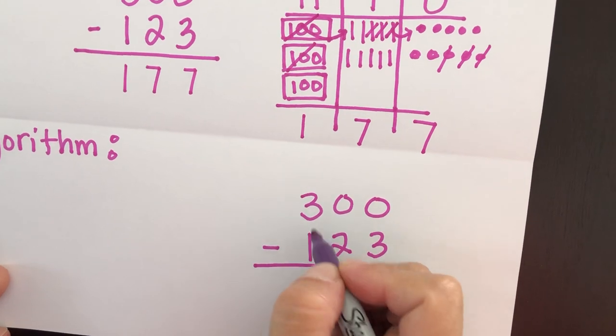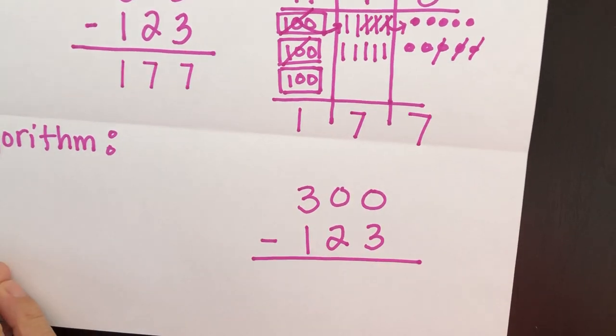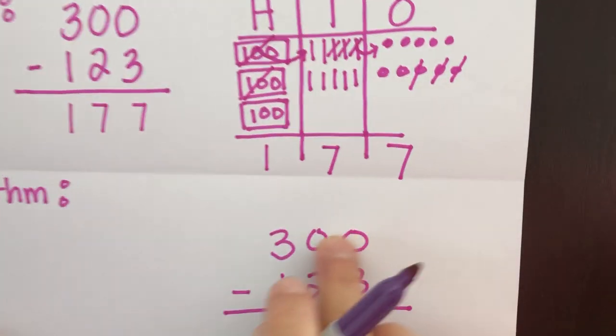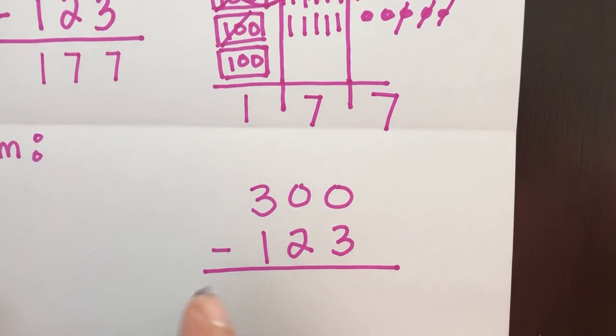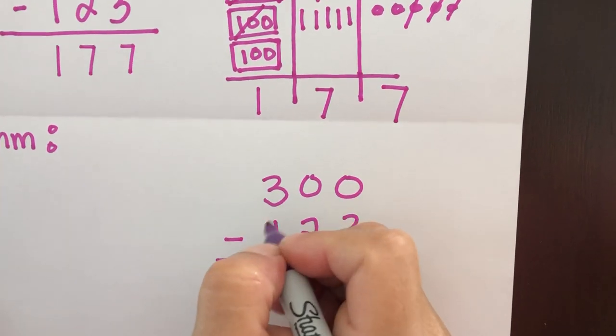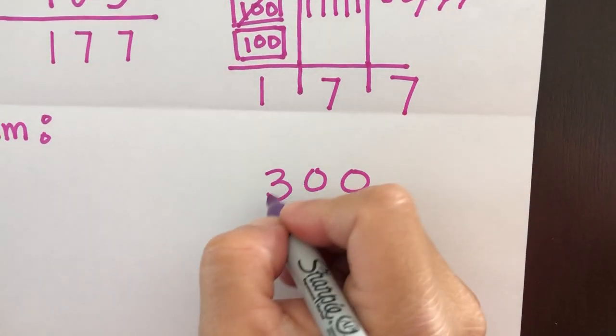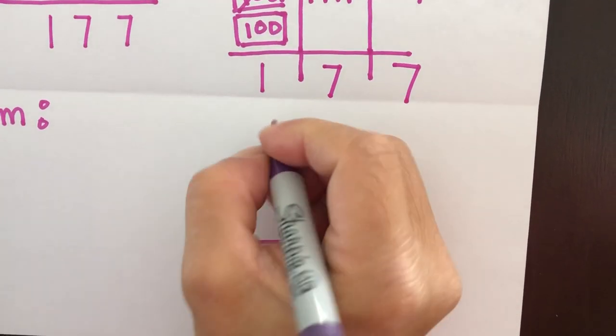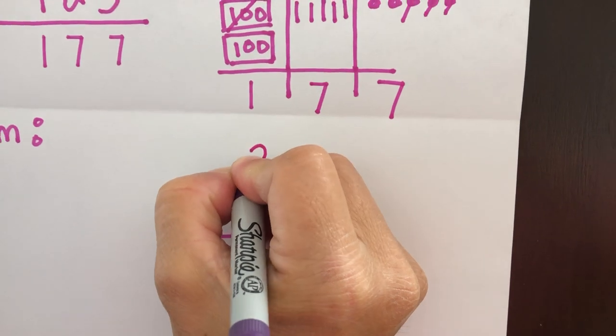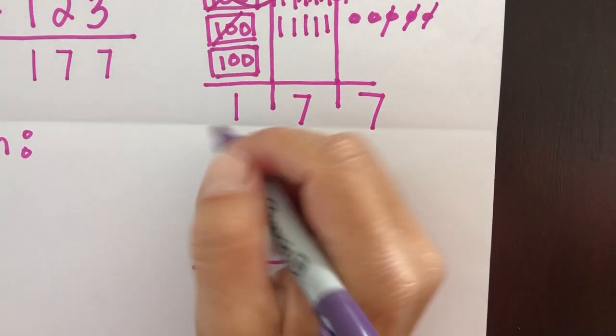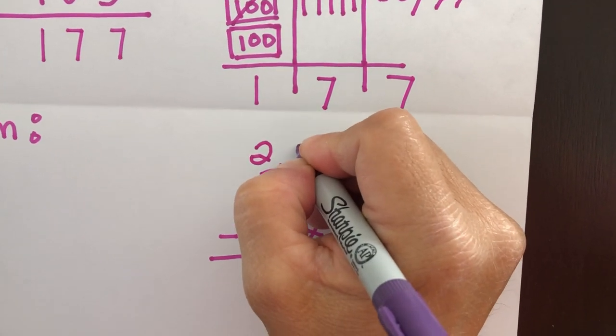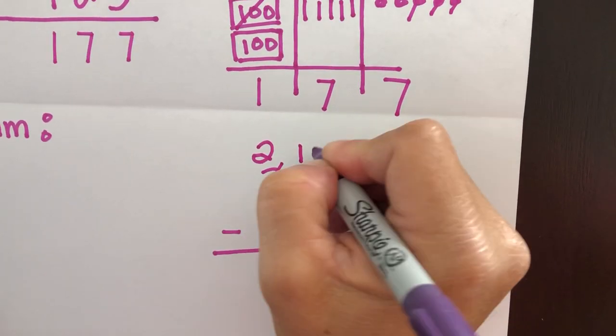But we can take one away from three. So in order for us to perform these operations here, the subtraction operations, we have to regroup from the hundreds column. Just like we did with the model. So I'm going to cross off my three, and I'm going to turn it into a two. And that 100 that I borrowed, I'm going to put it over here, cross this off, and make it a 10.